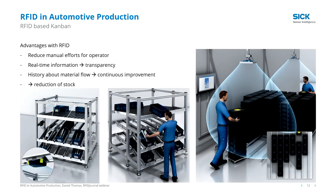Let's have a look at some processes shown in the pictures on the lower side of this page. People using RFID within Kanban systems say that you can reduce manual efforts for the operators. For example, a replenishment process should be organized — let's take the left side — by putting an empty container in the top level of this flow rack.